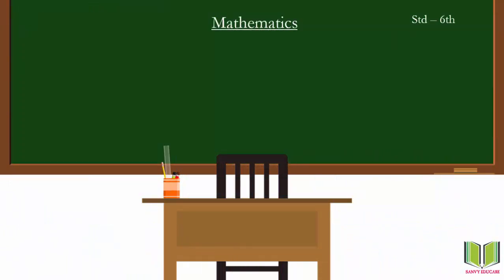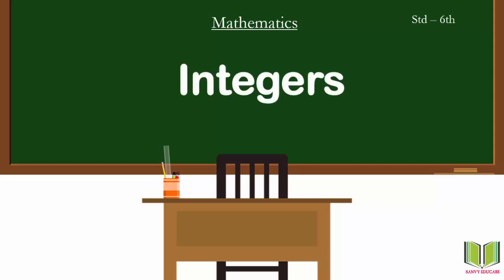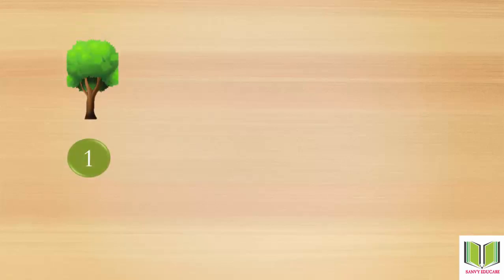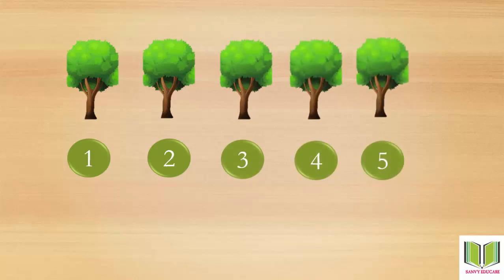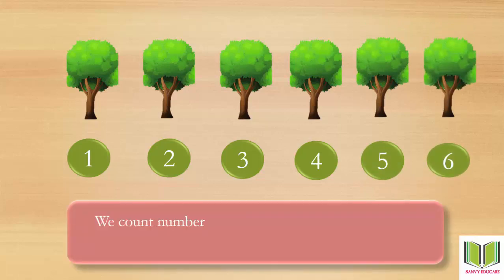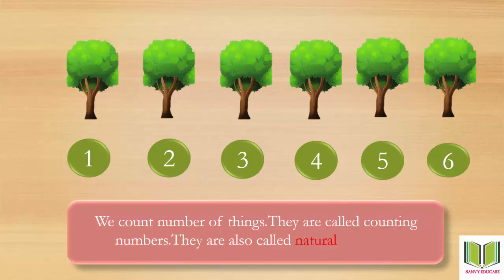Subject: Mathematics, Standard Sixth. We are going to learn about integers. Here we have a tree, and we count: one, two, three, four, five, six. We count the number of things — these are called counting numbers. They are also called natural numbers. So all these numbers are called counting numbers, or natural numbers.